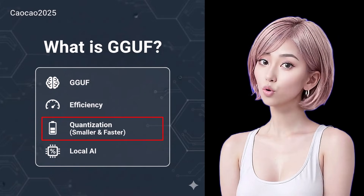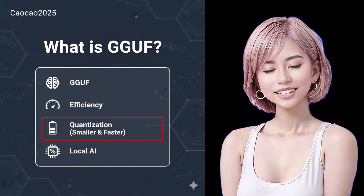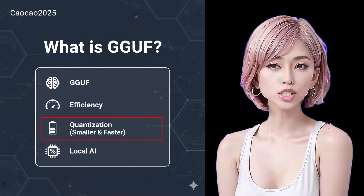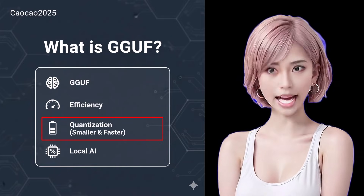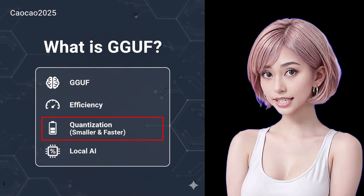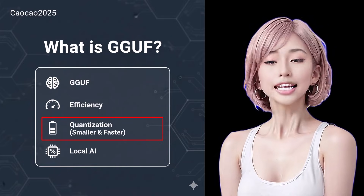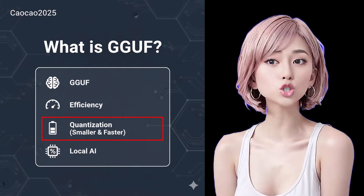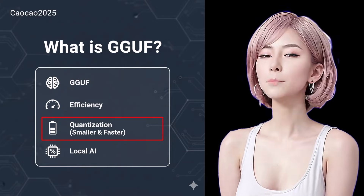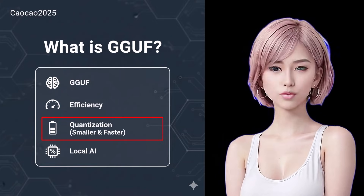GGUF supports various quantization levels: Q2, Q4, Q8, etc. This process reduces the precision of the model's weights — for example, from 16-bit down to 4-bit. This makes the file much smaller and faster to run, with surprisingly little impact on the model's performance.